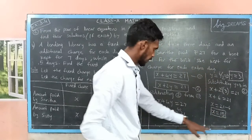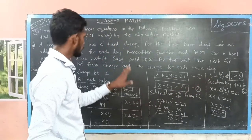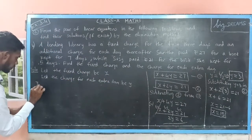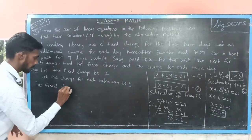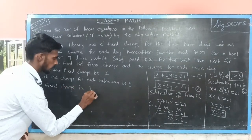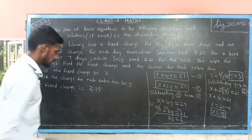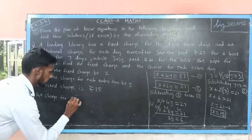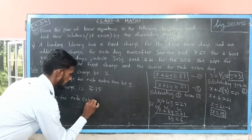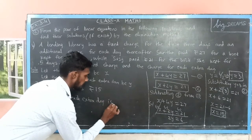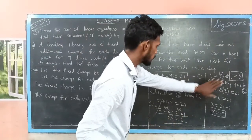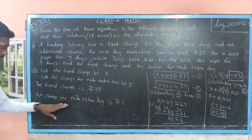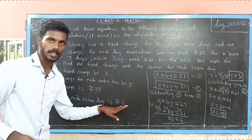Thus we have obtained the values for x and y. We assumed the fixed charge to be x rupees, so the fixed charge is rupees 15. The charge for each extra day was assumed to be y, and the value of y is 3, so it is rupees 3. Thus, the fixed charge is rupees 15 and the charge for each extra day is rupees 3.